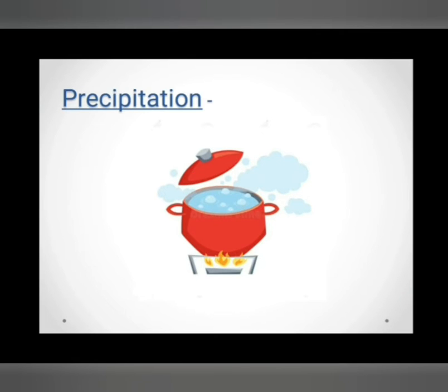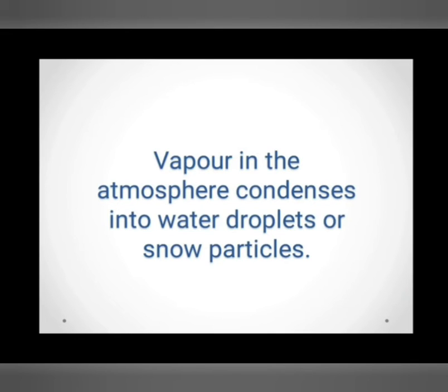Similarly, this happens in atmosphere. How? Vapour in the atmosphere condenses into water droplets or snow particles. Meaning, the area with low temperature will convert the water droplets into snow.